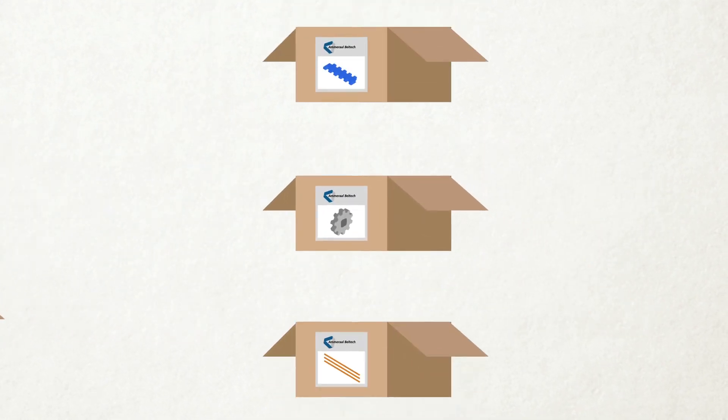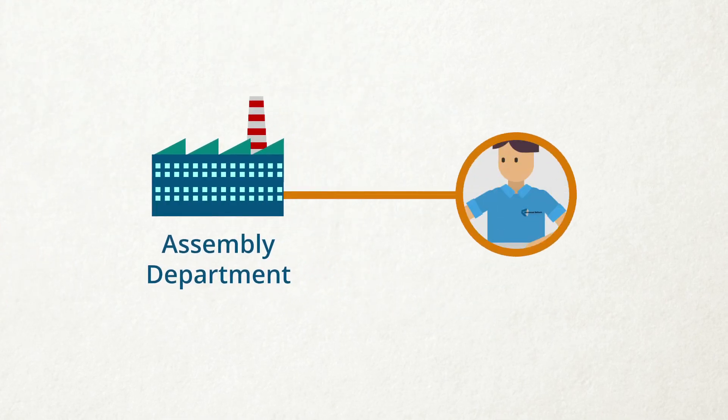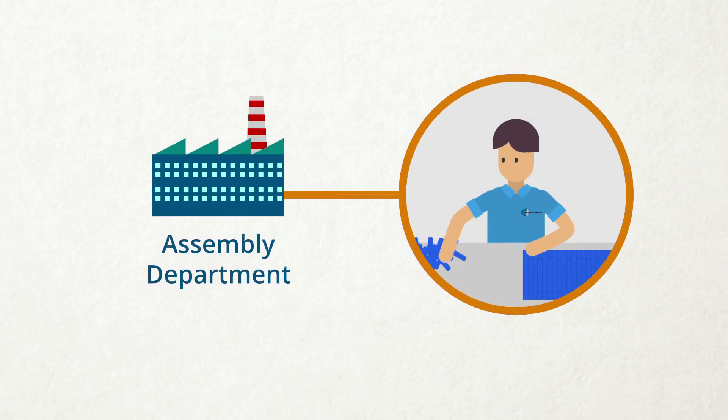The links, pins, and sprockets are stored in a warehouse until they are transported to the assembly department. Belts are assembled manually to the length and width ordered by the customer.